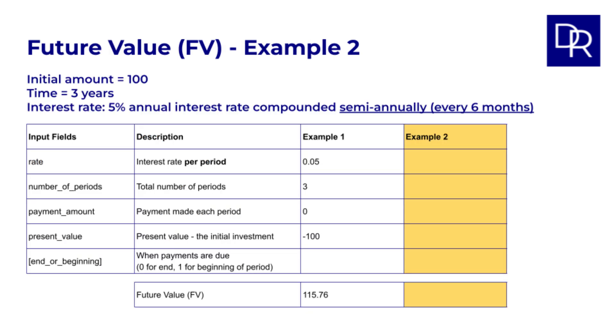Example 2 is similar to example 1. The only change is that the 5% annual interest is now compounded semi-annually instead of annually. So what do we need to change here in the inputs? The rate is per period. By far the most common error in using the FV and PV functions is using the annual rate, instead of the rate per period. In example 1 we had 5% compounded annually, but in example 2 it is compounded semi-annually, so we use 0.05 divided by 2 equals 0.025 every 6 months. The number of periods is the number of years, 3, times the number per year, 2, so 3 times 2 equals 6.